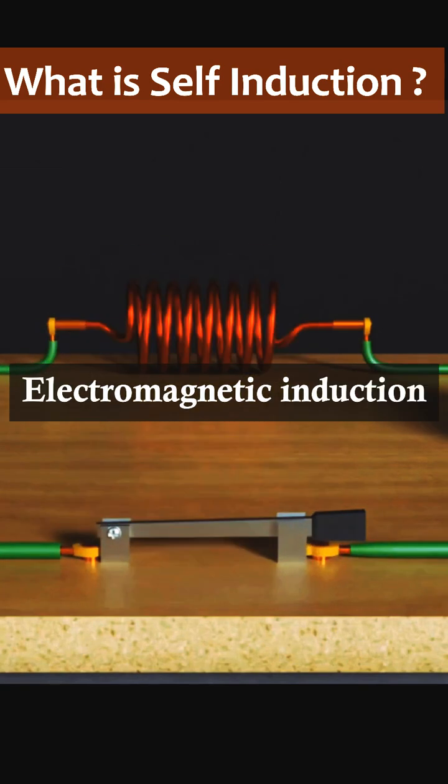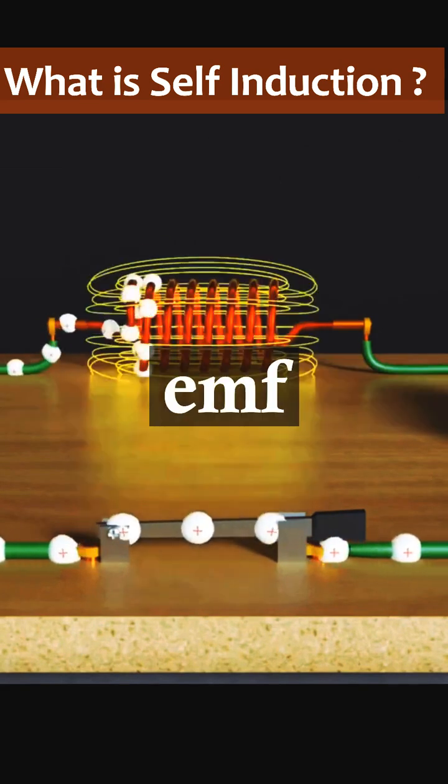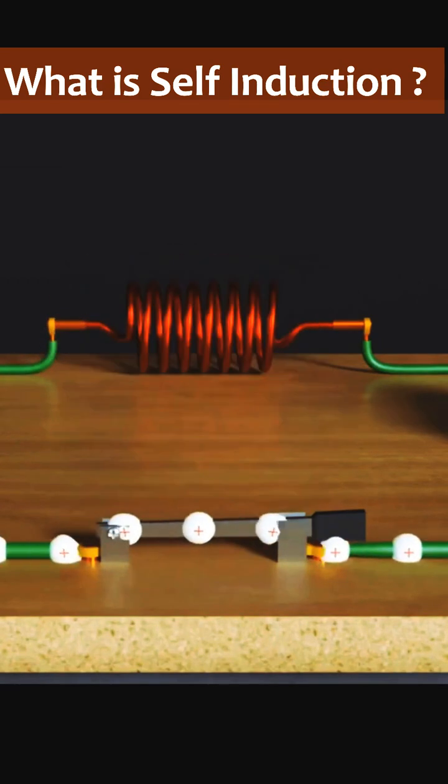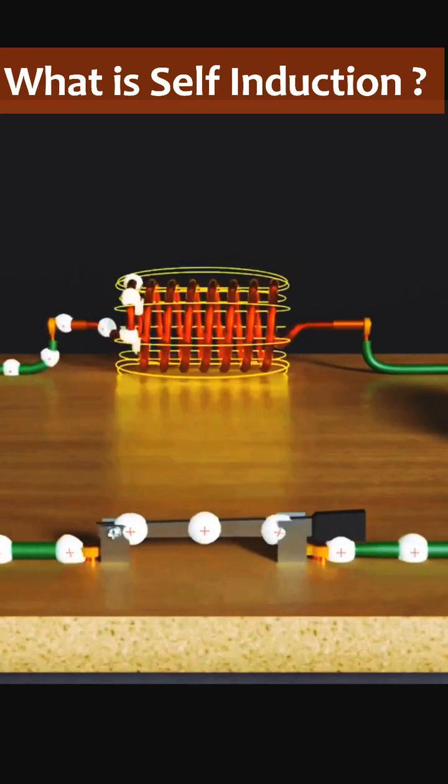And we know that Faraday's second law of Electromagnetic Induction tells us that the magnitude of EMF and current induced depends upon how rapidly the magnetic flux changes. According to Lenz's law, direction of induced EMF and current will be in such a way to oppose its cause.